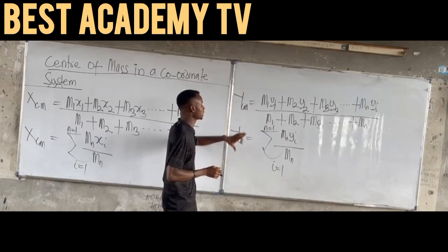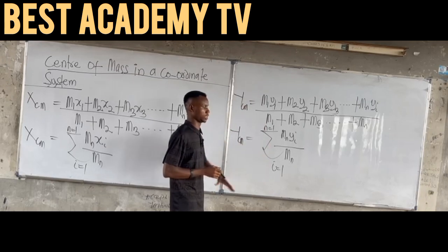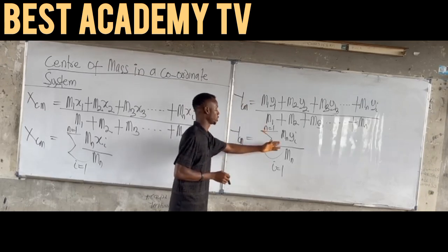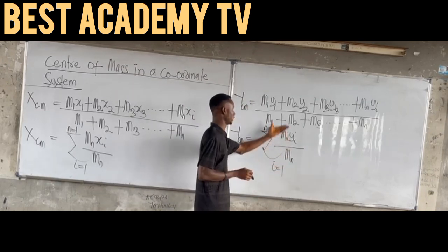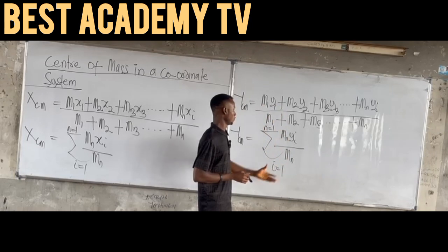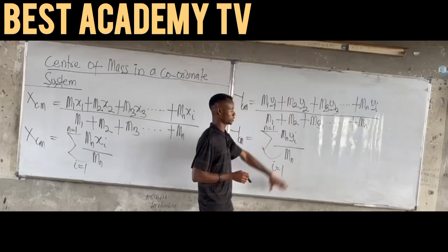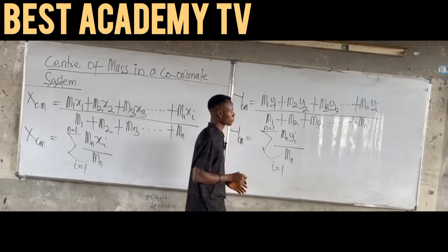Representing this formula in terms of summation: Y_cm equals the sum of (M_i · Y_i) divided by the sum of M_i. The same logic applies — if you put i as 1 here, you get the first term; if you put i as 2, you get the second term. Please take note.